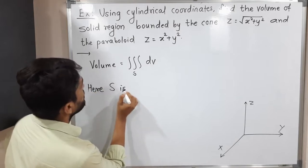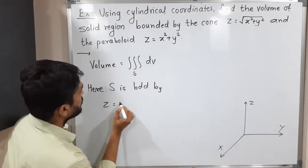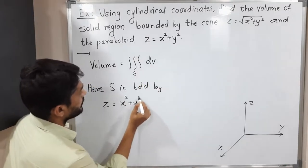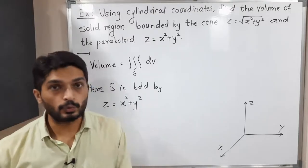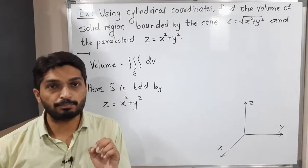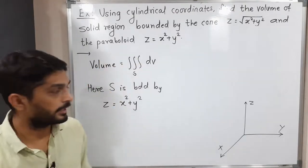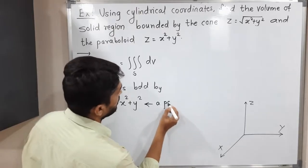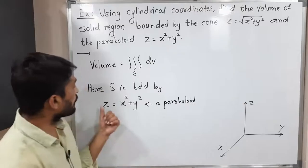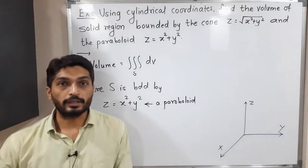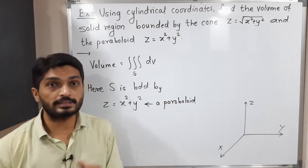S is bounded by z is equal to x squared plus y squared, where the power of z is 1 and the power of x and y is 2. So that means it is 100 percent a parabola. Since the power of z is 1, the parabola is around the z-axis, and around the positive z-axis since z has a plus sign.